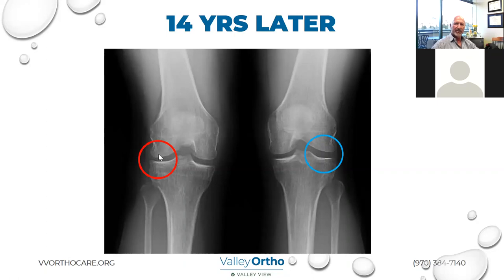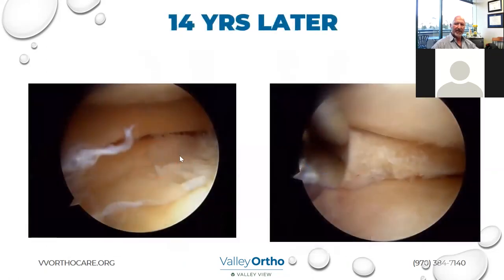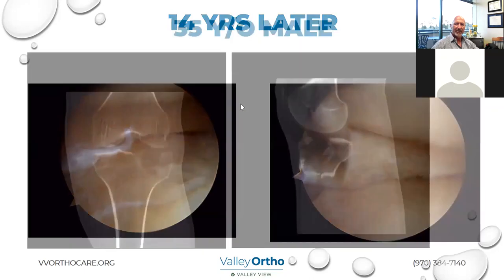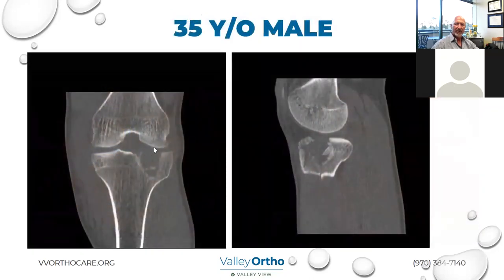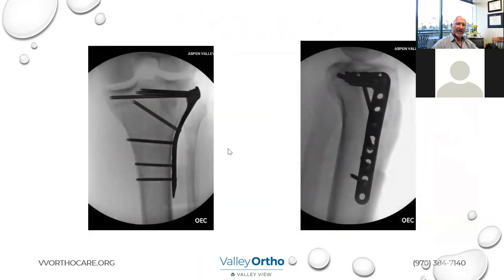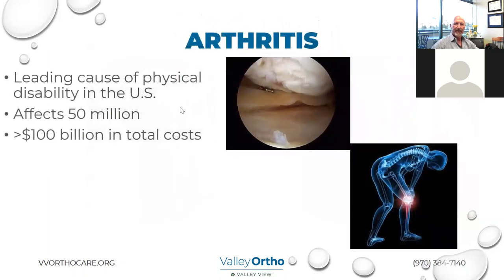We went in 14 years later because she had a meniscus tear over here. Her cartilage looked pretty good where she had that previous fracture. This other case is more obvious — this femur basically came down, pushing the articular cartilage down. We did this one open through an incision, elevated everything, bone grafted, and fixed it.